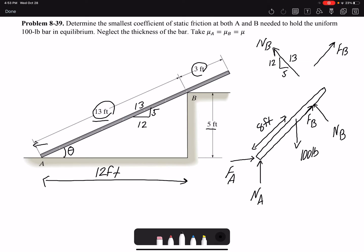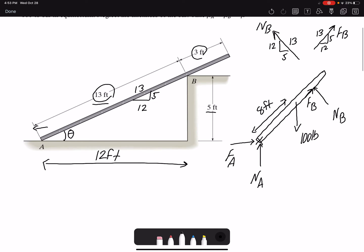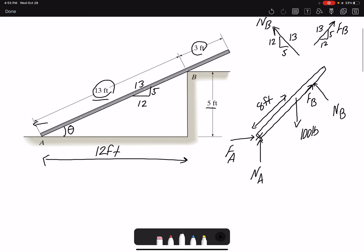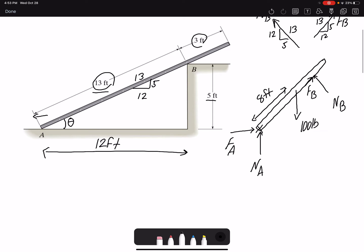I'm going to write summation of moments about point A so I can find N_B. That would be my only unknown. So I write summation of moments about point A equals zero.